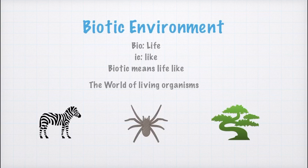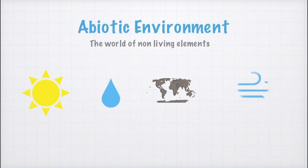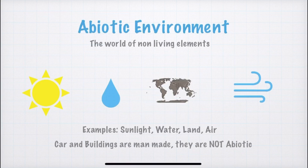Since we've studied biotic environment, what is the other type of natural environment? It is the abiotic environment. Abiotic environment is the world of non-living elements — for example, sunlight, water, land, and air. The non-living elements which exist naturally constitute abiotic environment. Remember: cars and buildings are not abiotic because they are manmade, not natural. And abiotic is an example of natural environment, so remember this point.